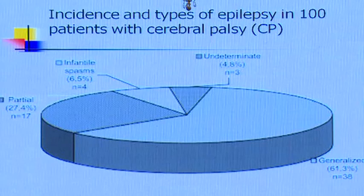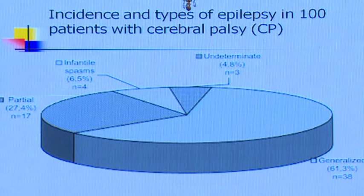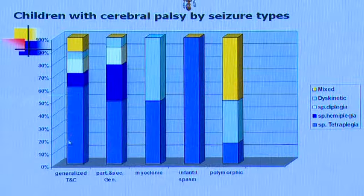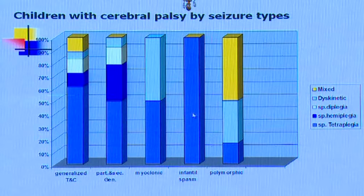This study shows the incidence and type of epilepsy in 100 patients with cerebral palsy. The majority had generalized epilepsy, followed by partial epilepsy, and a certain percentage presented with infantile spasms. Regarding seizure types, most patients presented with generalized tonic-clonic seizures, and those who presented with infantile spasms were most likely to have spastic tetraparesis type of cerebral palsy.